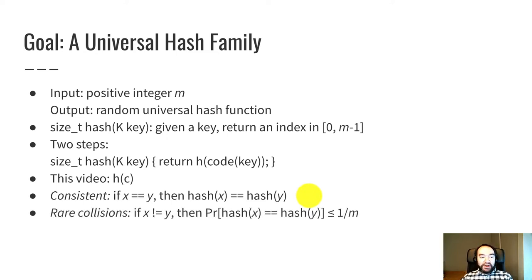And we also need a rare collision property. That means that if x and y are different keys, then the probability that the keys have the same hash code has to be small. Namely, that has to be less than or equal to 1 over m.